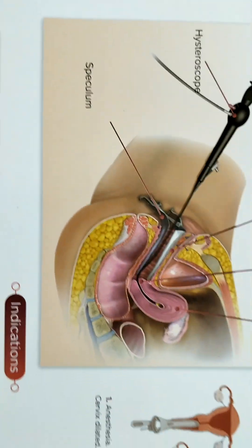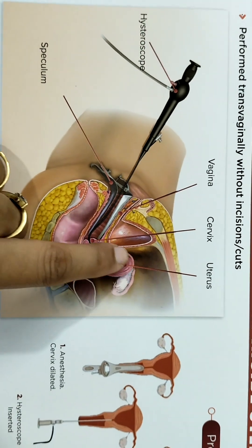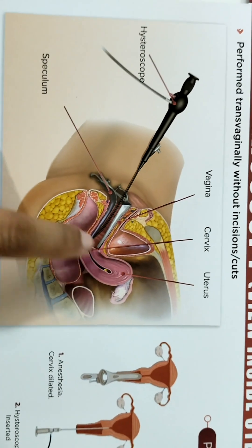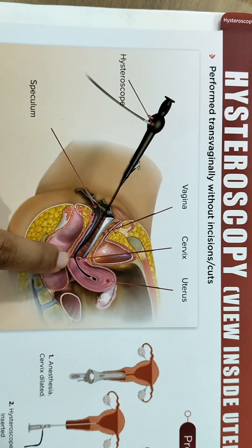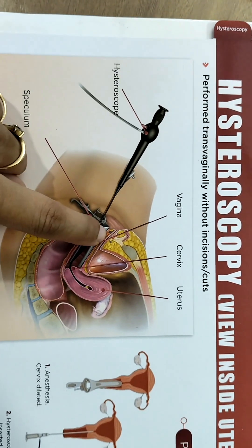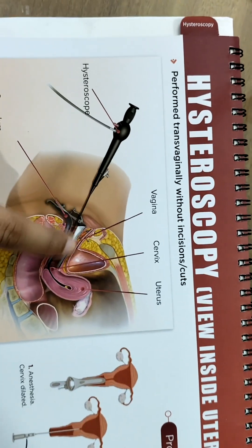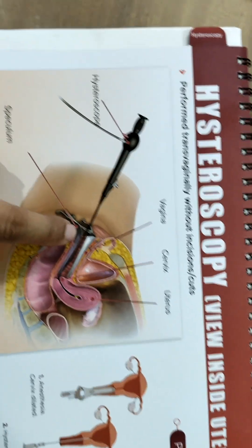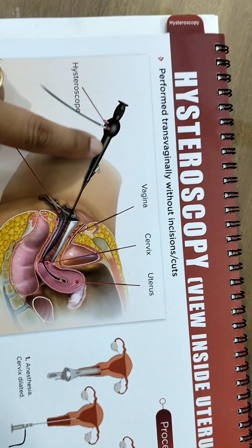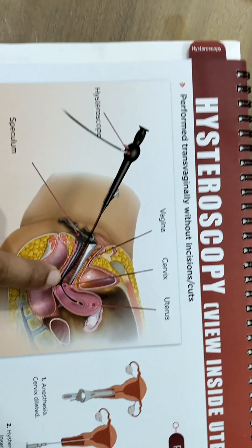If you have a closer look at this image, you can see this portion is the uterus — it is a muscular organ. This mouth of the uterus is known as the cervix. This muscular tunnel is the vagina, in which we have put one instrument known as a speculum, and then we are putting the hysteroscope. This instrument is known as a hysteroscope.